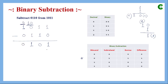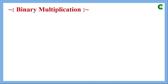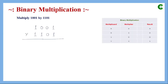Next we perform binary multiplication, multiplying two 4-bit binary numbers. The rules of multiplication are straightforward: 0 times 0 is 0, 1 times 0 is 0, 0 times 1 is 0, and only 1 times 1 gives 1. We proceed using partial products, just as in decimal long multiplication.